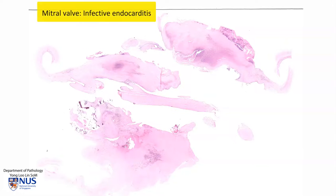This is a virtual microscopy slide of a case of infective endocarditis of the mitral valve. We're looking at three pieces of the mitral valve: one piece here, another piece here, and another piece here.